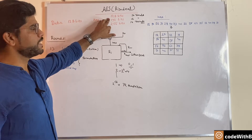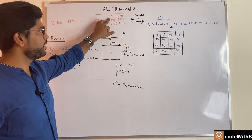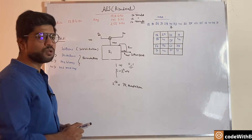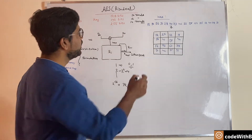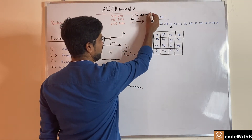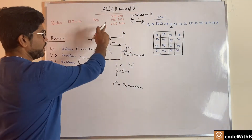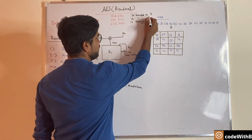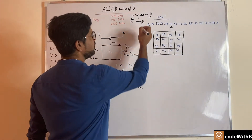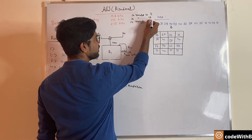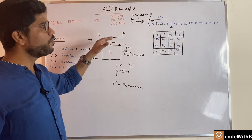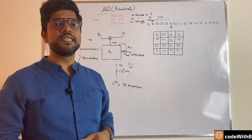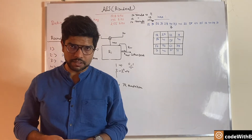We have the initial key K0 and for every round we need another key, meaning we need a total of 11 keys for 128-bit. Similarly, for 192 bits we need 13 keys, and for 14 rounds we need 15 keys. For every round we need a different key, and those keys are generated using the key expansion algorithm.